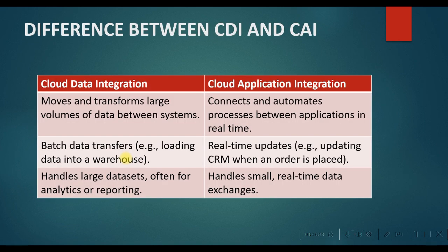In Cloud Data Integration, it moves and transfers large volumes of data between systems. Cloud Application Integration connects and automates processes between applications in real time. Cloud Data Integration batches data transfers — for example, loading data into a warehouse — while Cloud Application Integration performs real-time updates, for example updating the CRM when an order is placed. Data integration handles larger datasets often for analytics or reporting, while application integration handles small real-time data exchange.